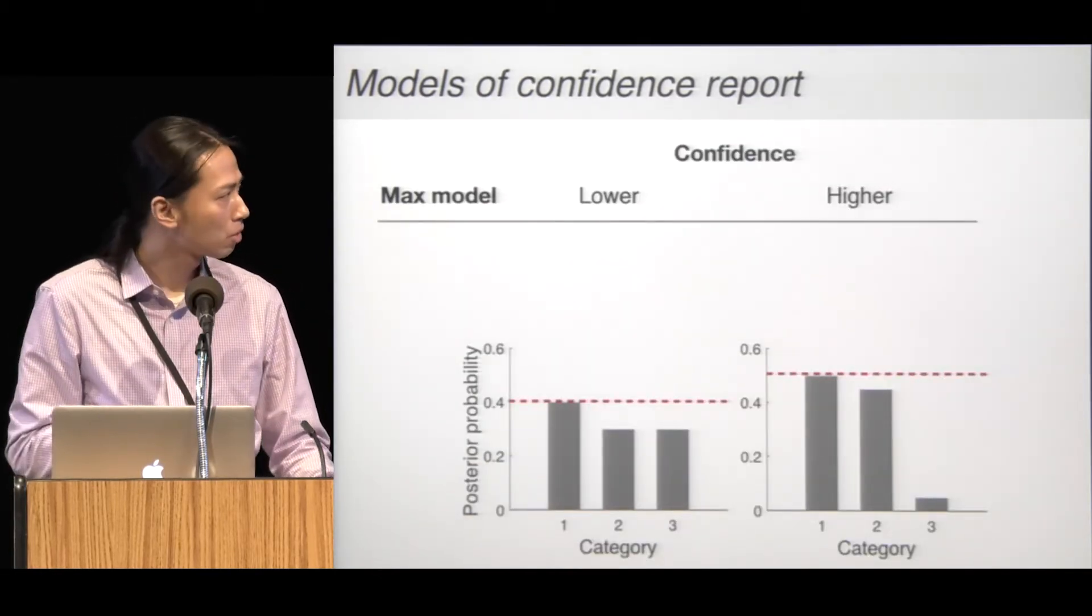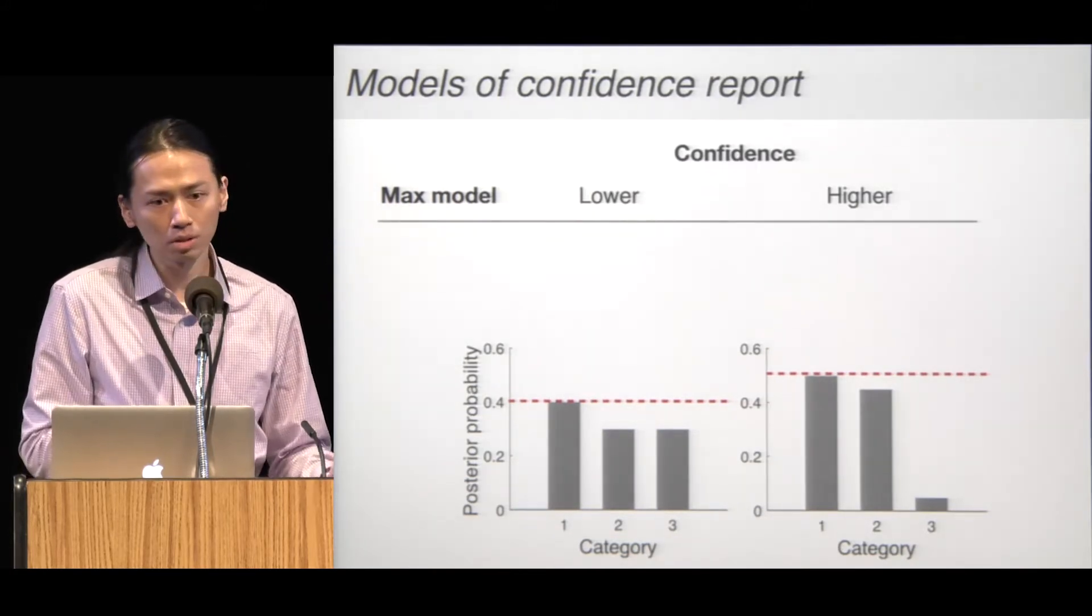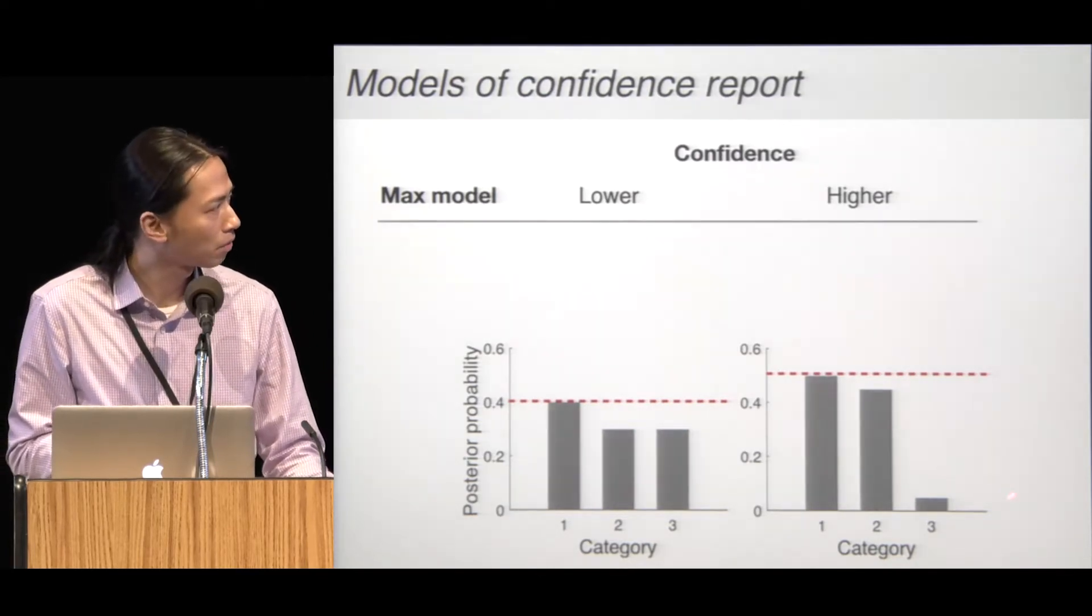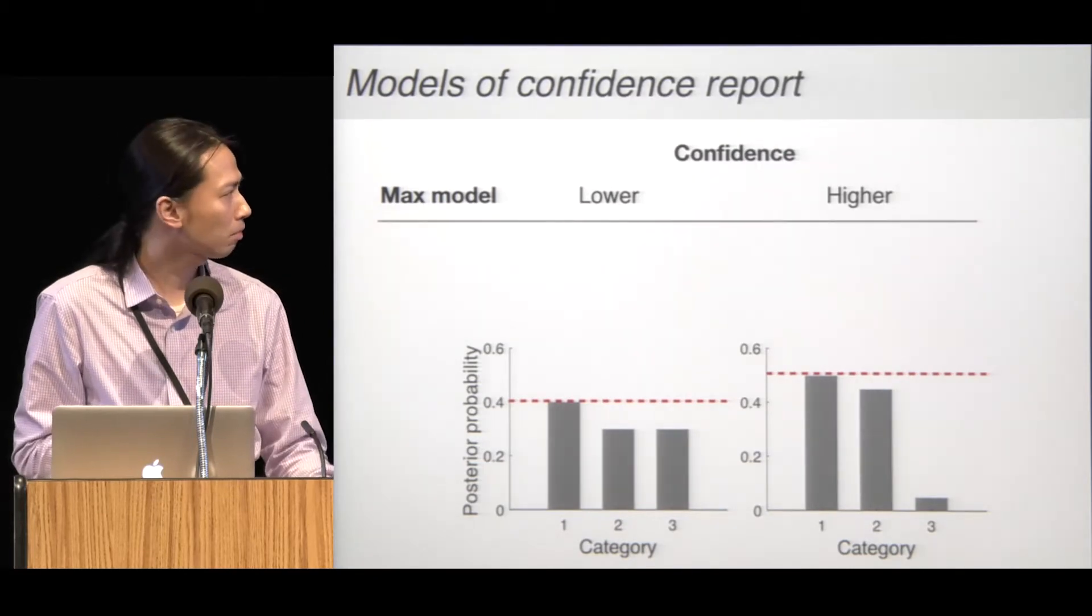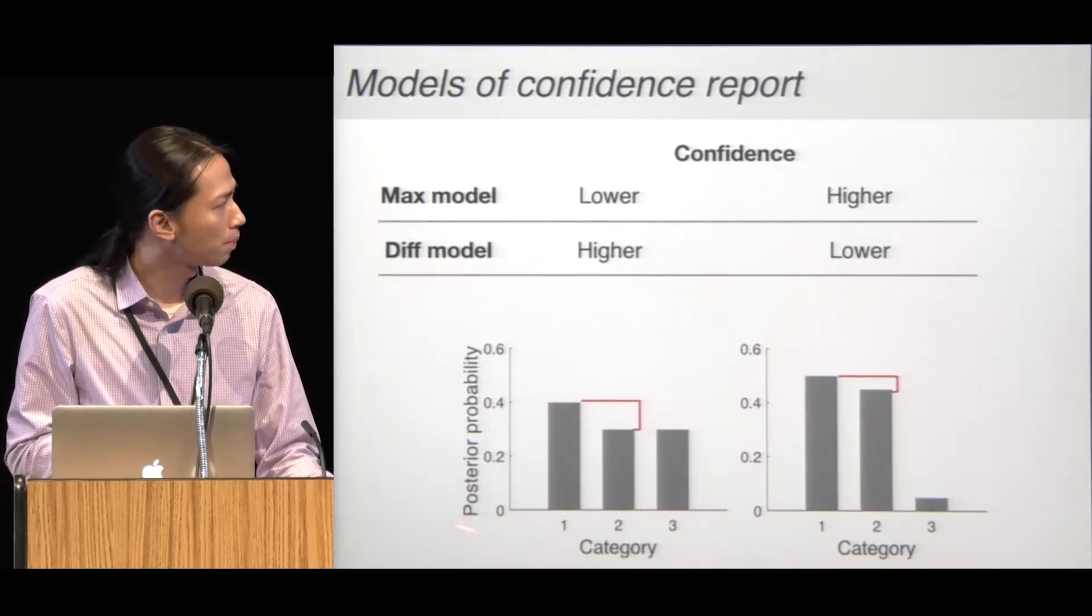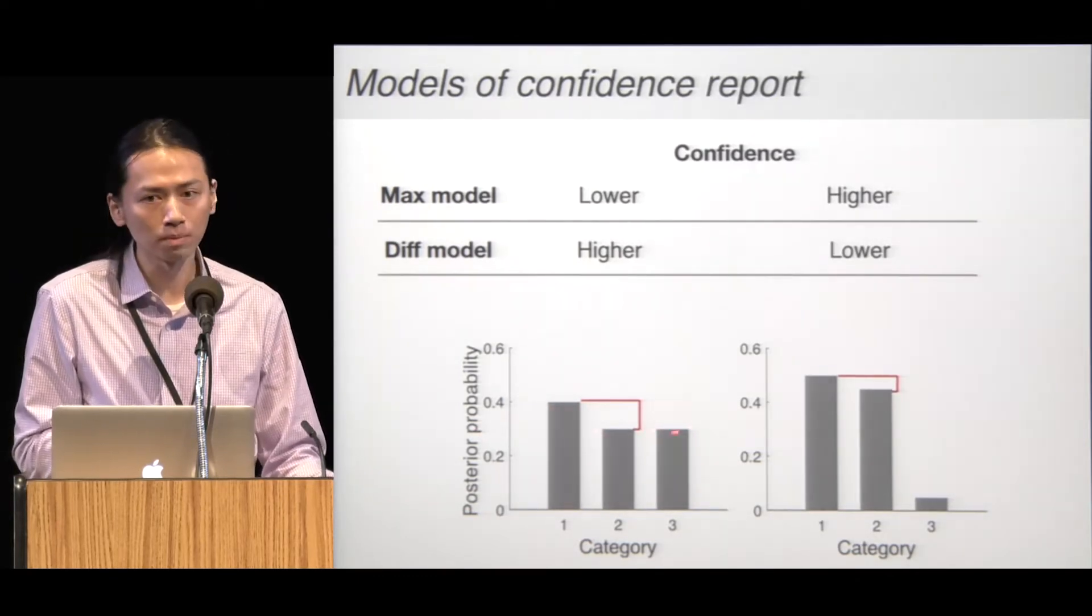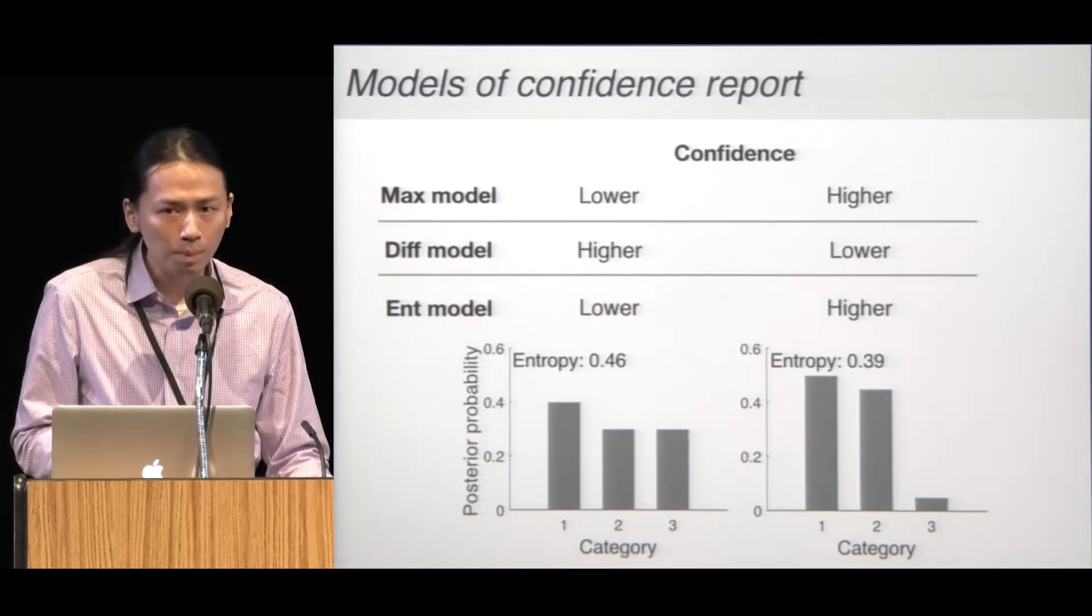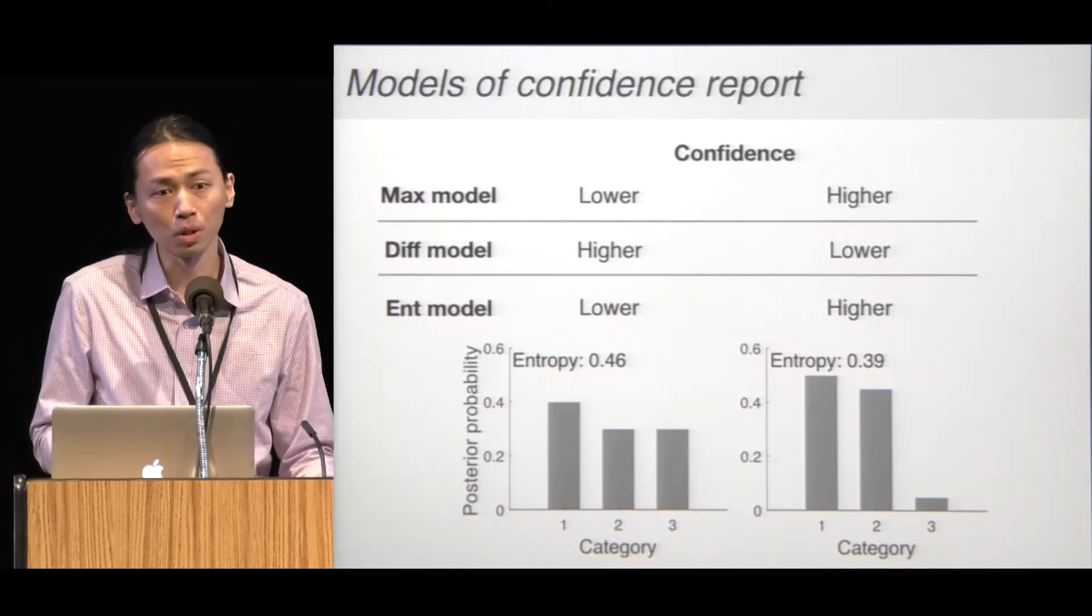Here at the bottom are two hypothetical examples for the posterior under a three-choice task. The Max model predicts higher confidence for the distribution at the right because it peaks at a higher value. The difference model, in contrast, predicts that the distribution at the left leads to higher confidence, because the best option is more distinguishable from the best alternative. The entropy model predicts that the distribution at the right leads to higher confidence because the entropy is lower.